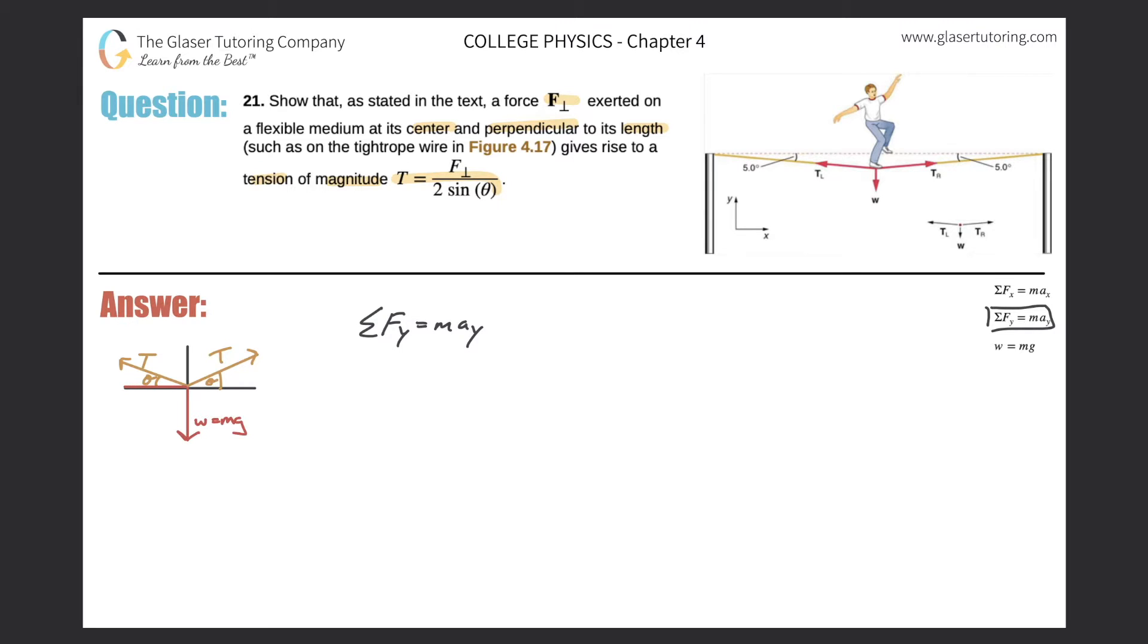Well, if you look at the x component here, it would be some value pointing to the left, and the x component of the tension on the right hand side would be some value pointing to the right. But they would be the same values because the T's are the same and the angles are the same. So the x values cancel - they're pointing in opposite directions. That is not the case in the y direction.